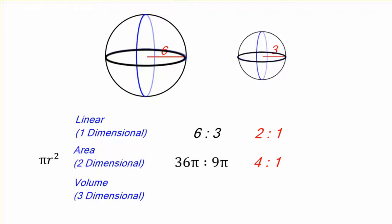But with the volume, you're going to use the formula 4 thirds pi r cubed. We can go over that in another video. But it's 288 pi to 36 pi. That's 8 to 1.